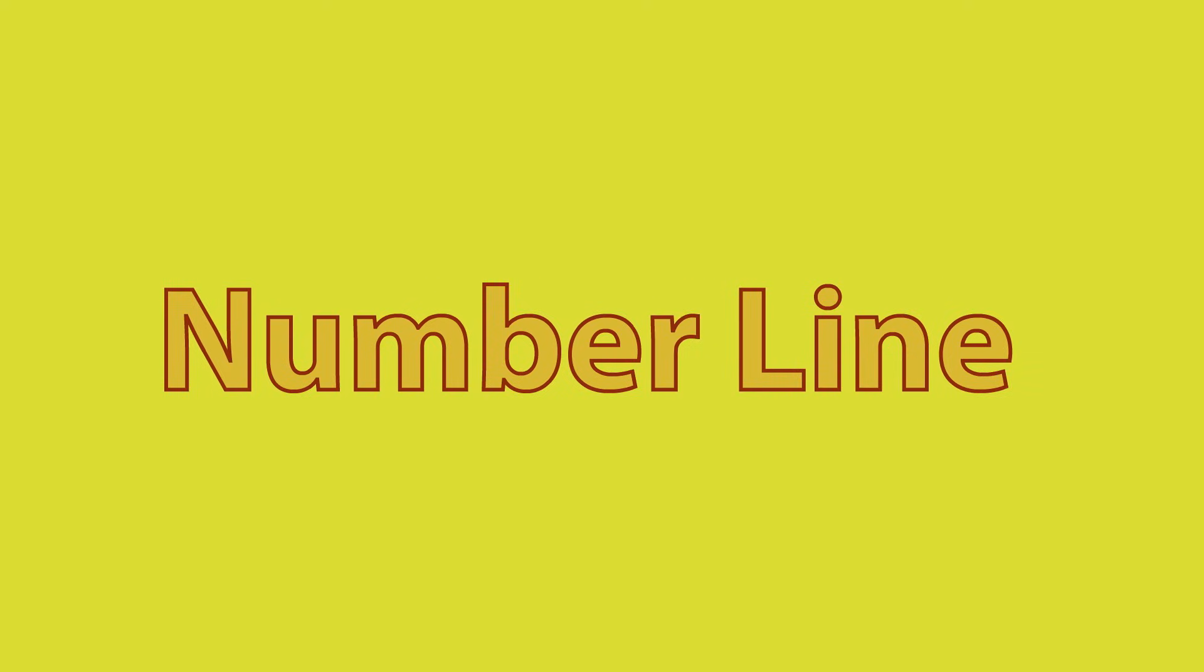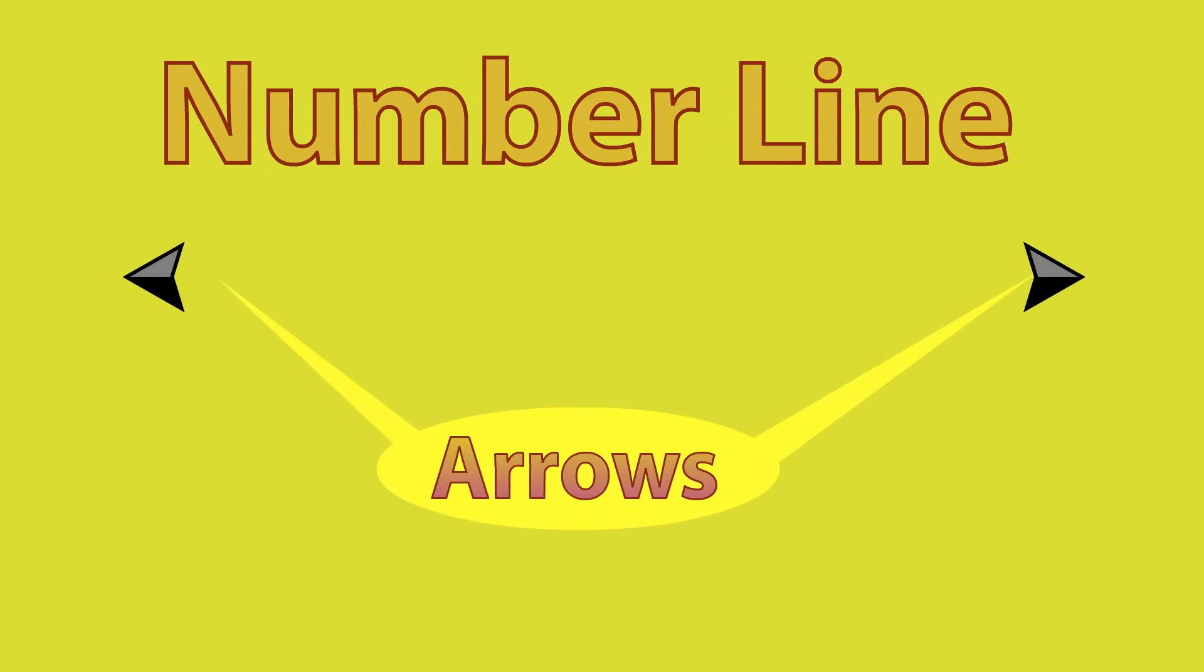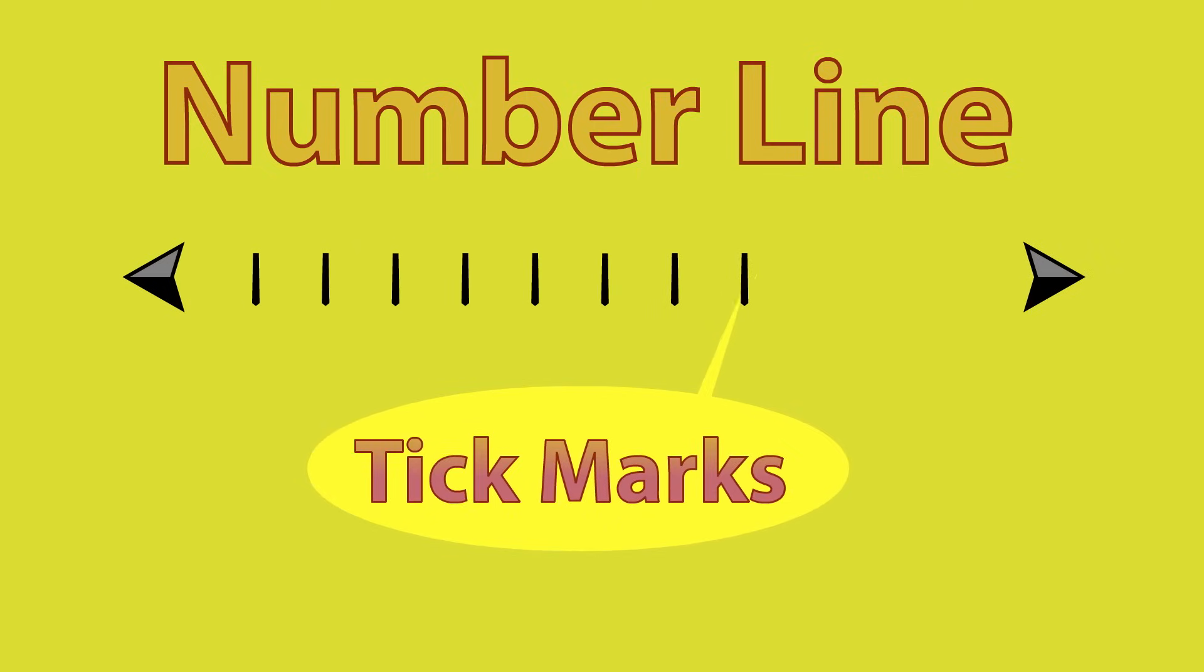A number line has arrows on both ends and tick marks for each number value.